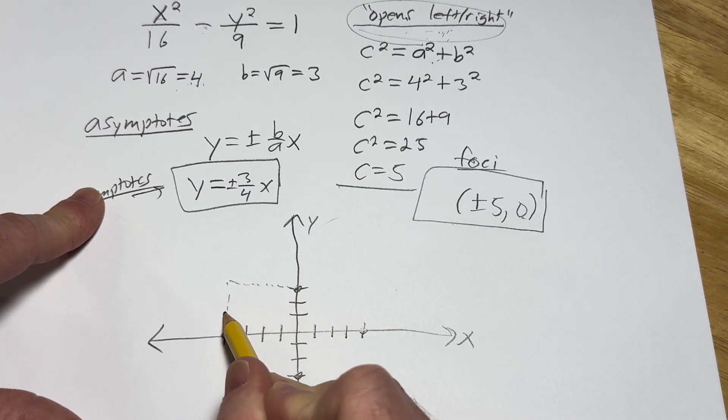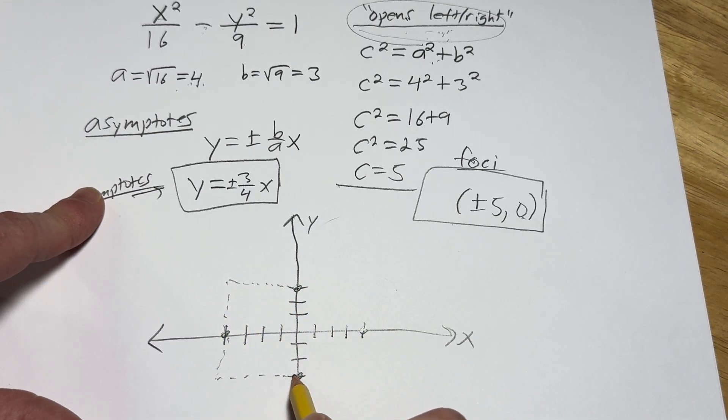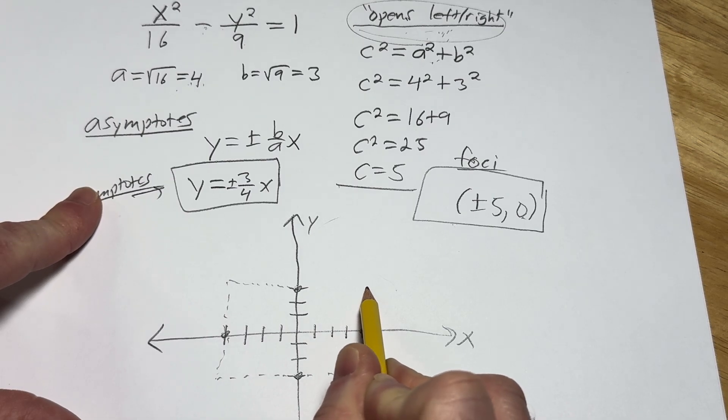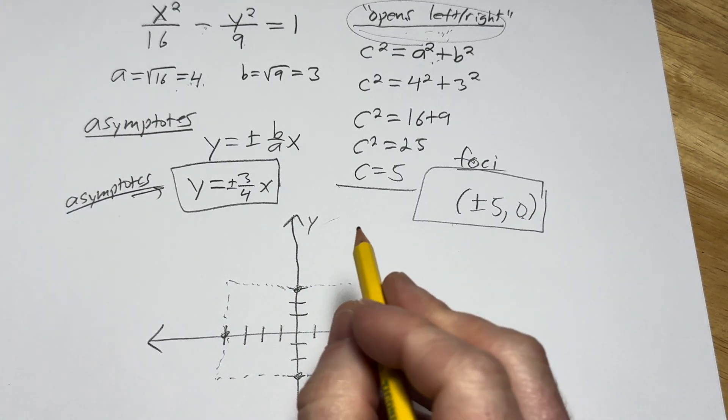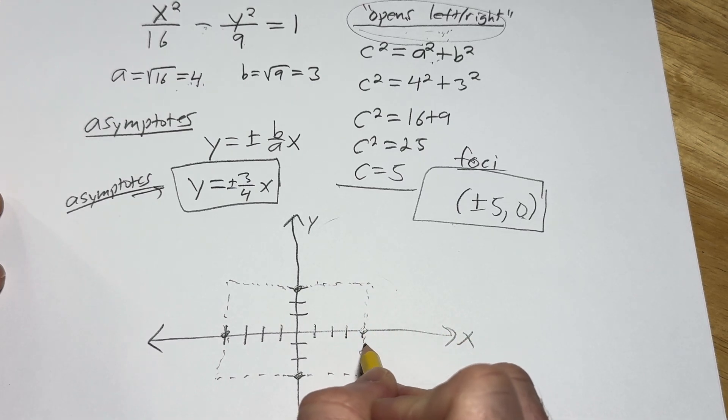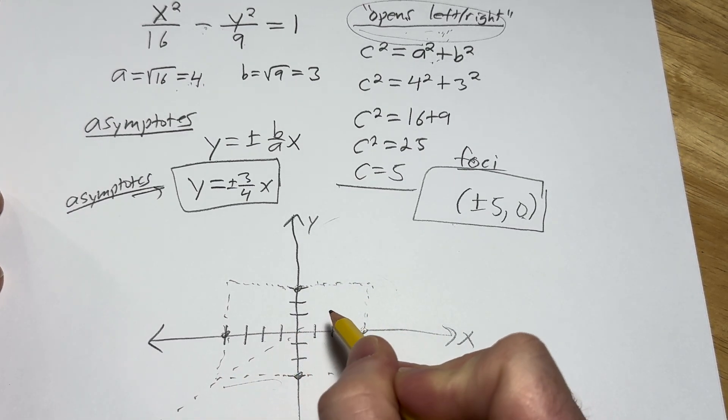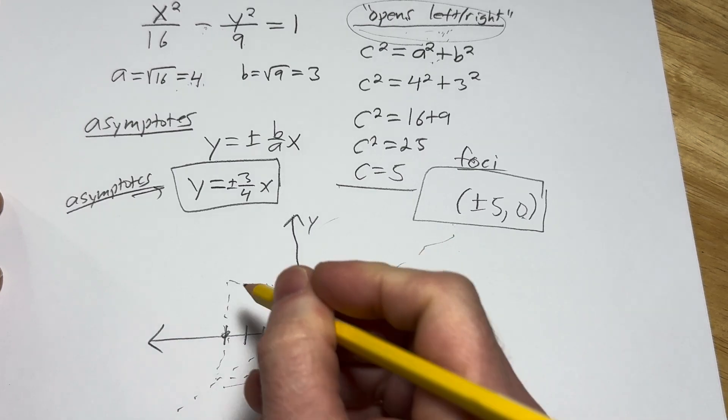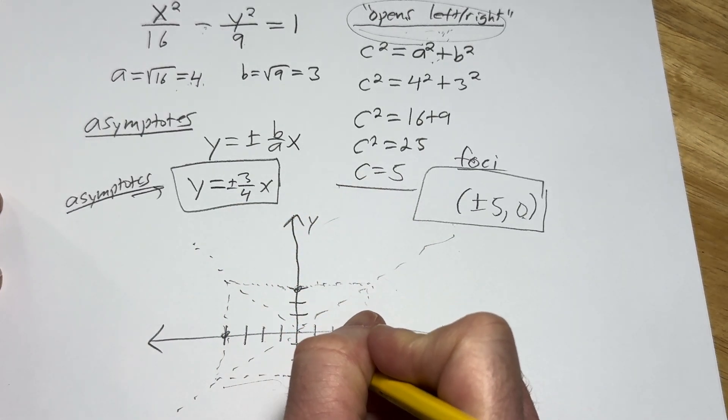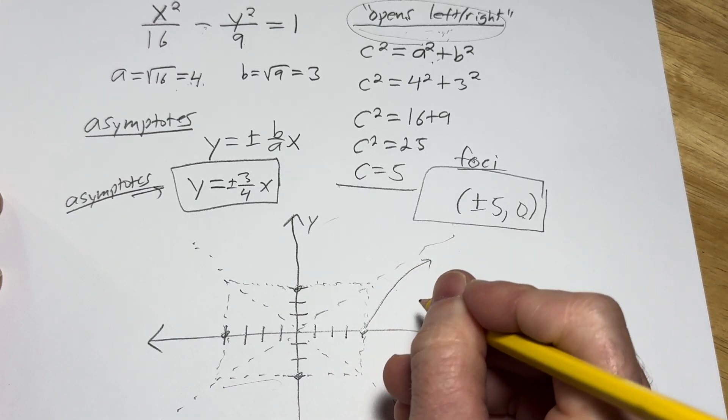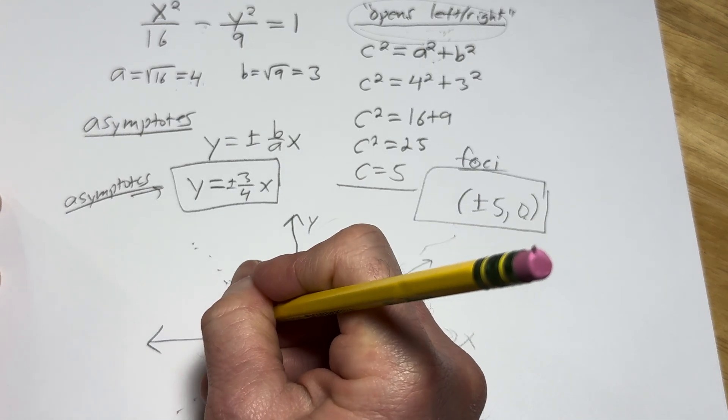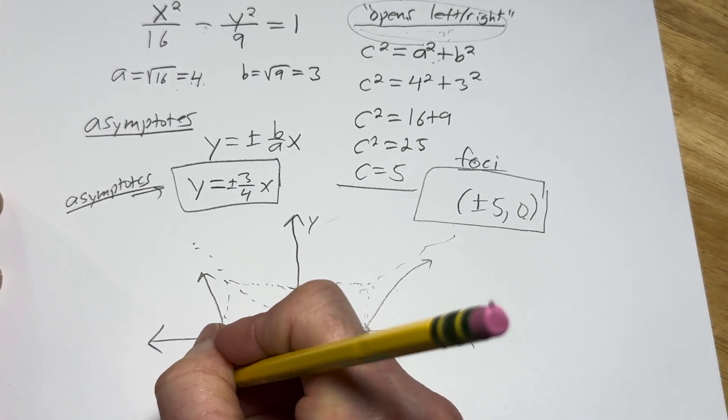And then you draw this rectangle. This rectangle is called the fundamental rectangle. And for some reason, every time I say fundamental rectangle, I picture a guy with glasses and an old hat and a beard. I don't know why. It's just this image I have. So there's the fundamental rectangle. The asymptotes do this and they go through the corners of the rectangle. It's really cool, right? And it opens left and right, so it looks like this.